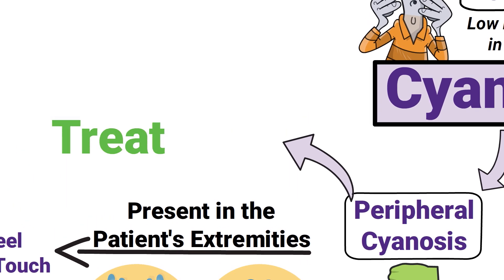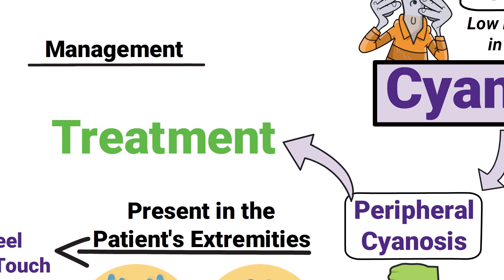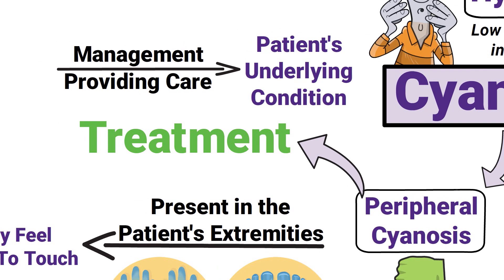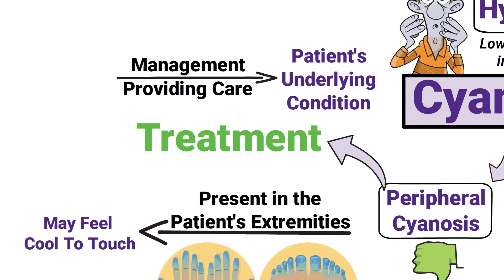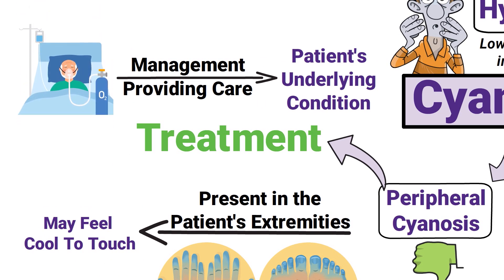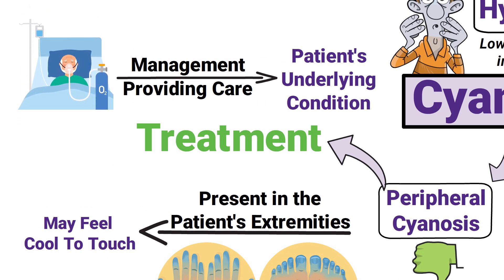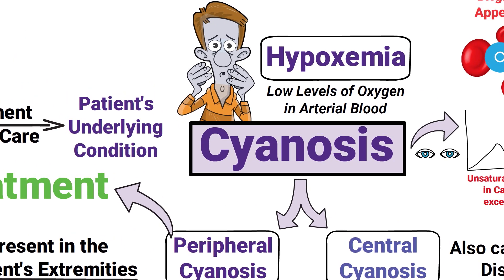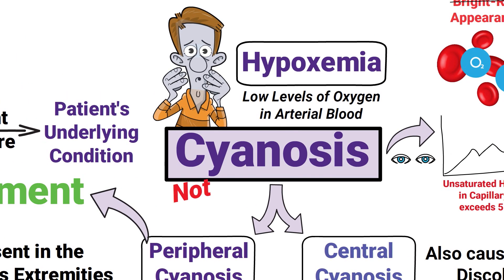The treatment of peripheral cyanosis involves management and providing care for the patient's underlying condition. Supplemental oxygen therapy is almost always indicated as well. It's important to remember that cyanosis by itself is not a disease — rather, it's a clinical sign of an underlying condition.